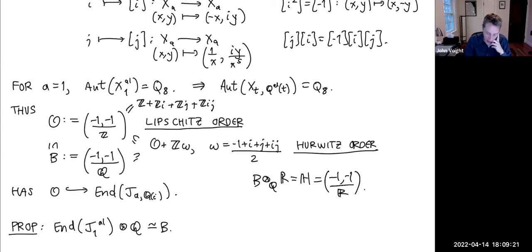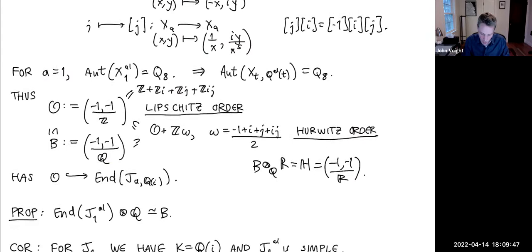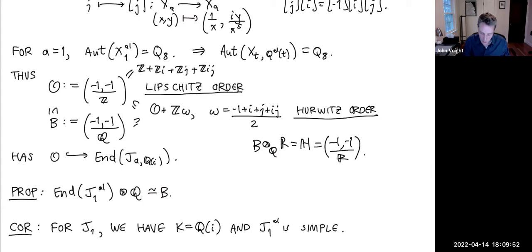Before proving this, here's a nice corollary for J_1: the geometric endomorphism algebra is B, so the field over which all endomorphisms are defined is exactly Q(i). It also shows J_1 is geometrically simple, because B is a division quaternion algebra. Now let's do some explicit computation.